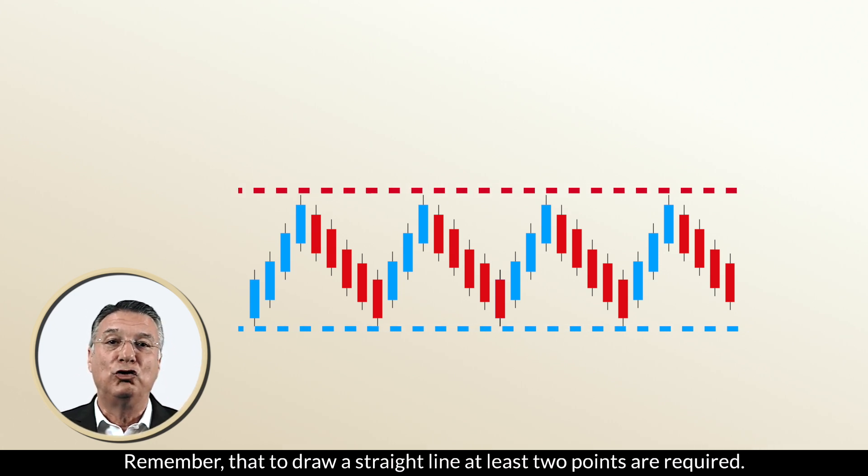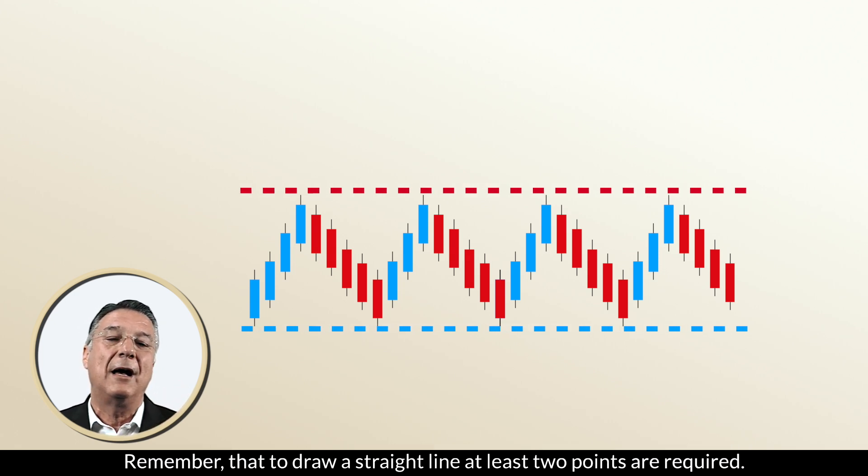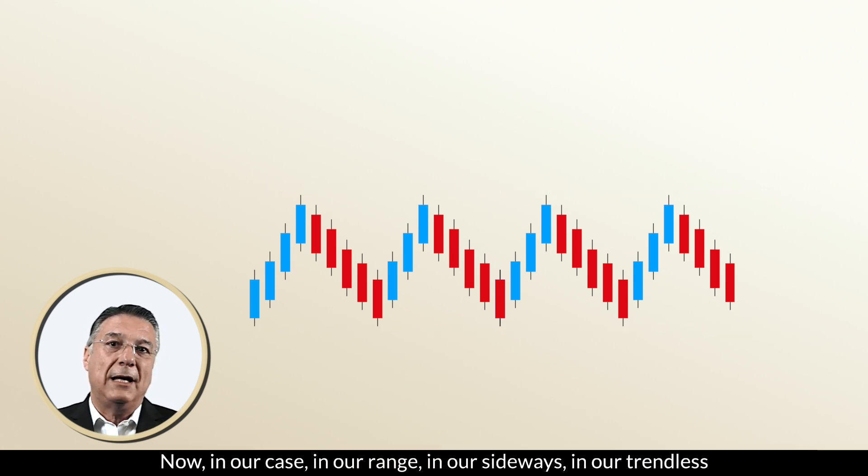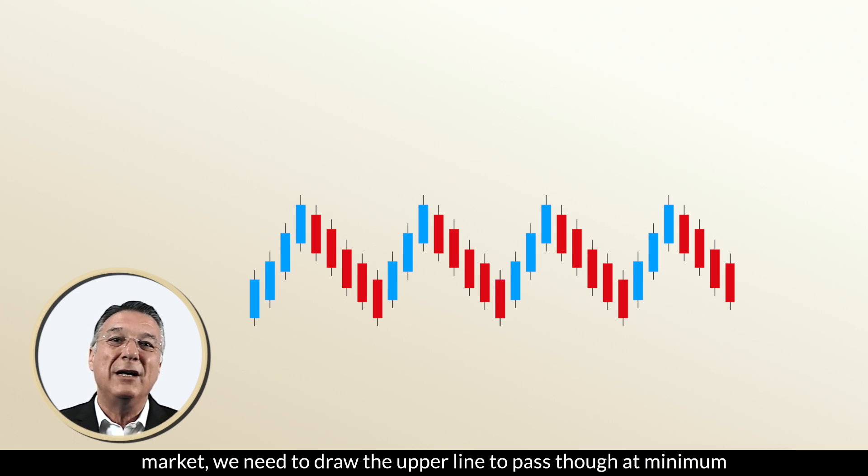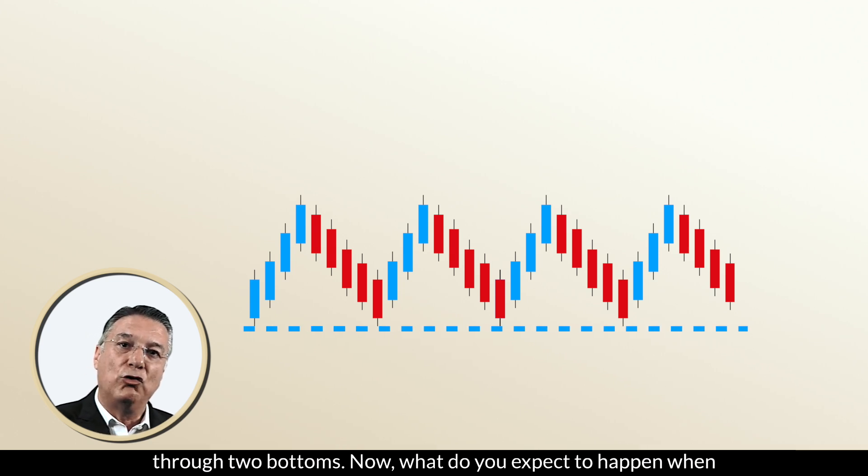Remember that to draw a straight line, at least two points are required. Now, in our case, in our range, in our sideways, in our trendless market, we need to draw the upper line to pass through at a minimum of two tops and, of course, the lower line to pass at a minimum through two bottoms.